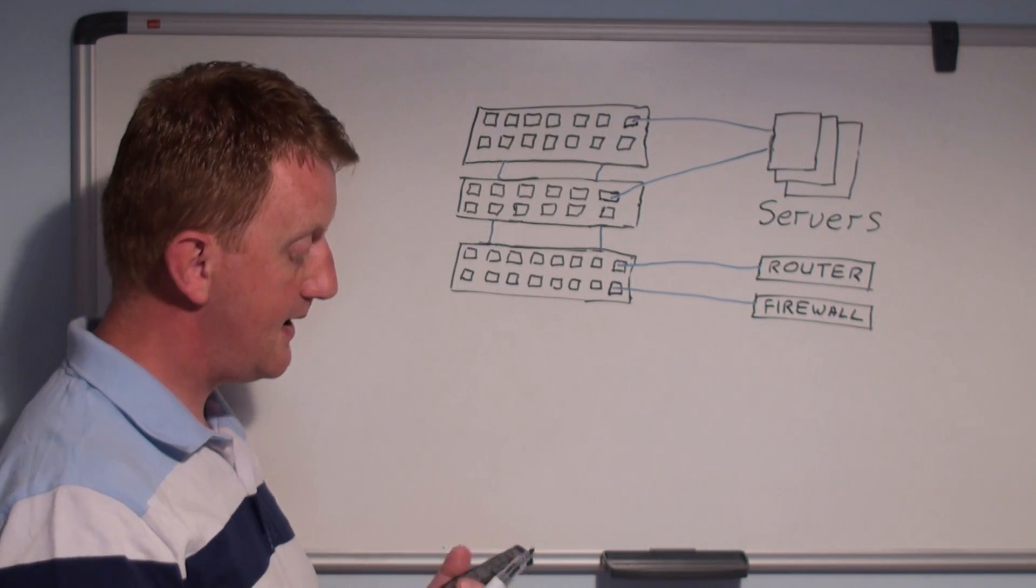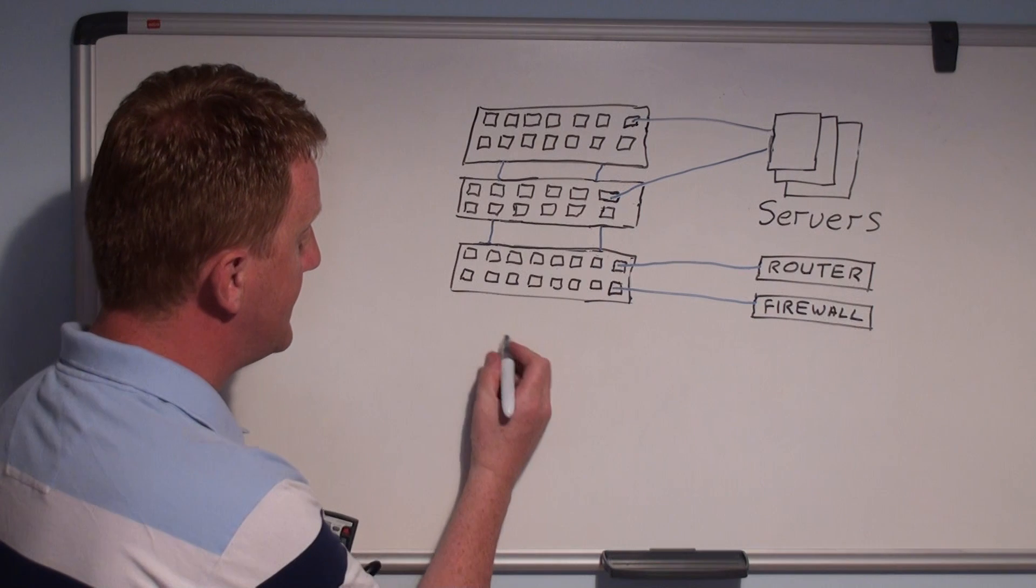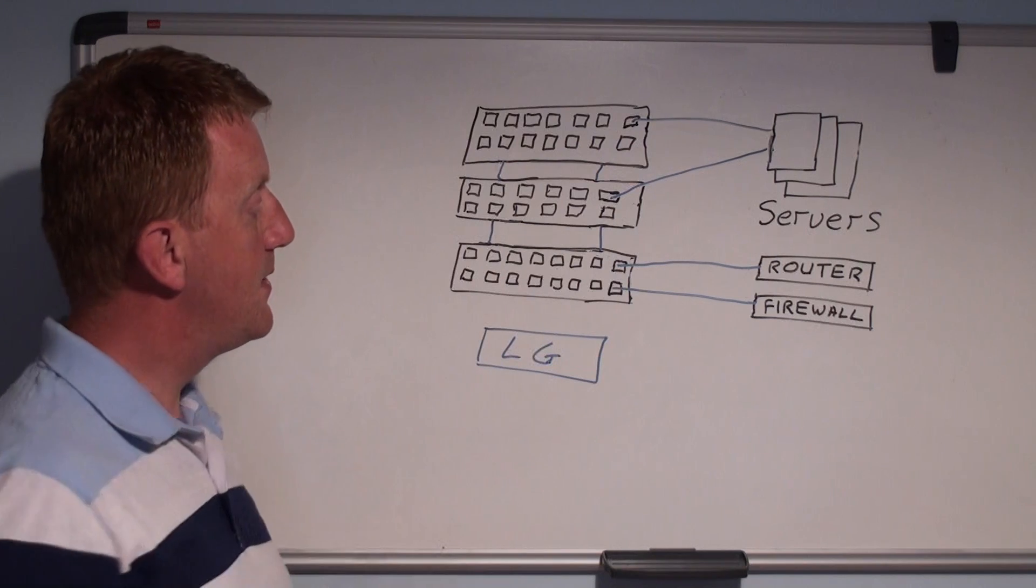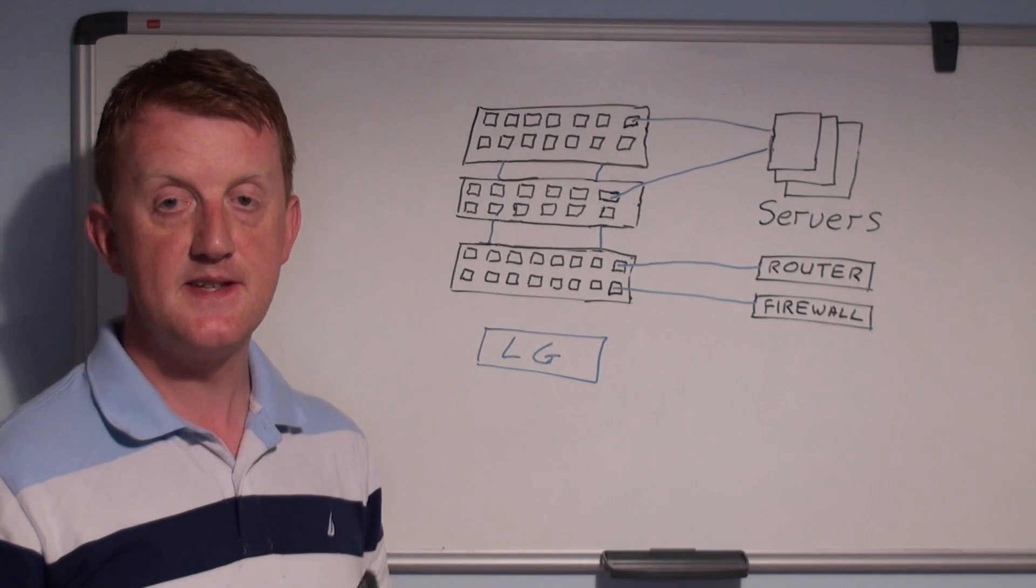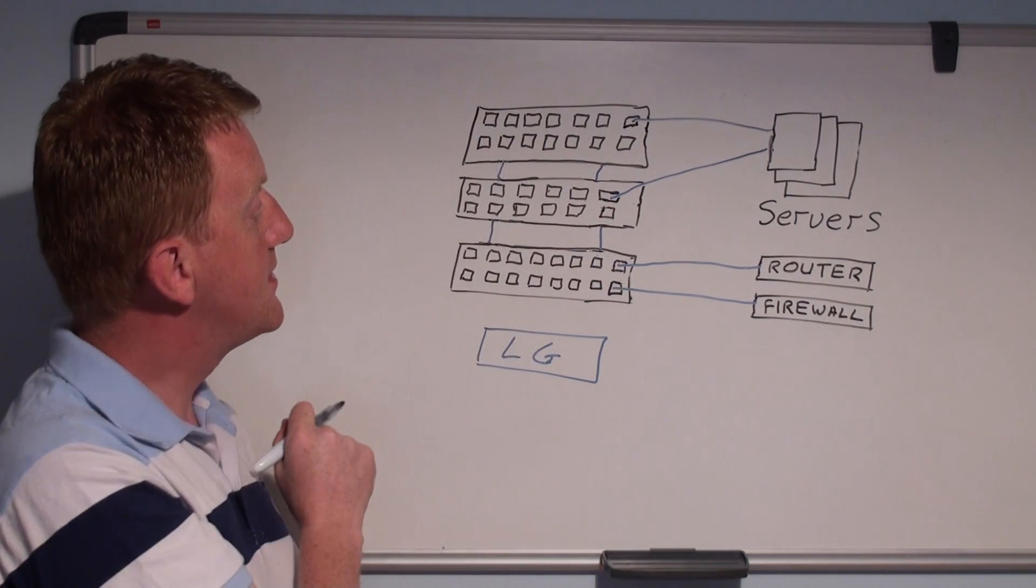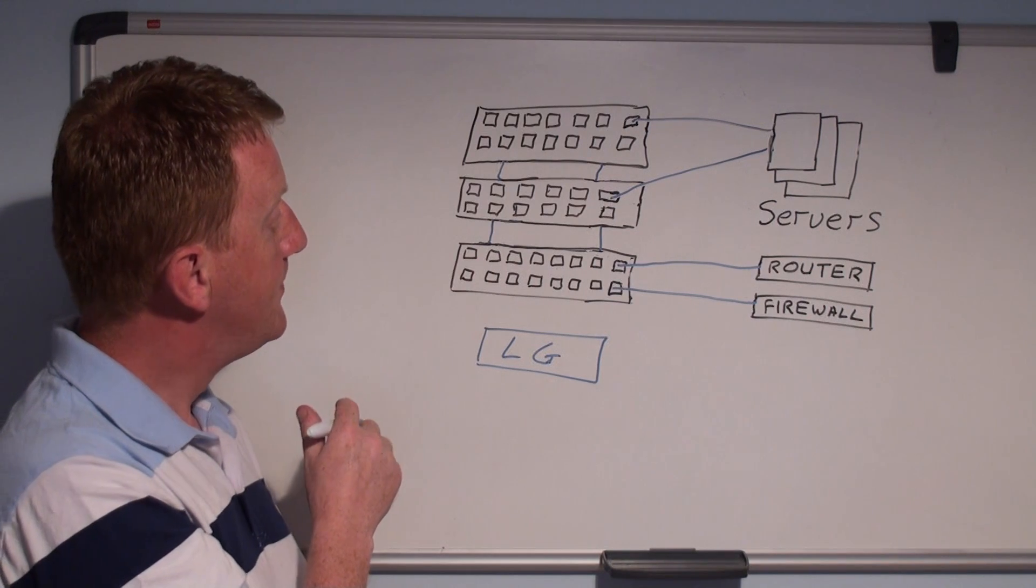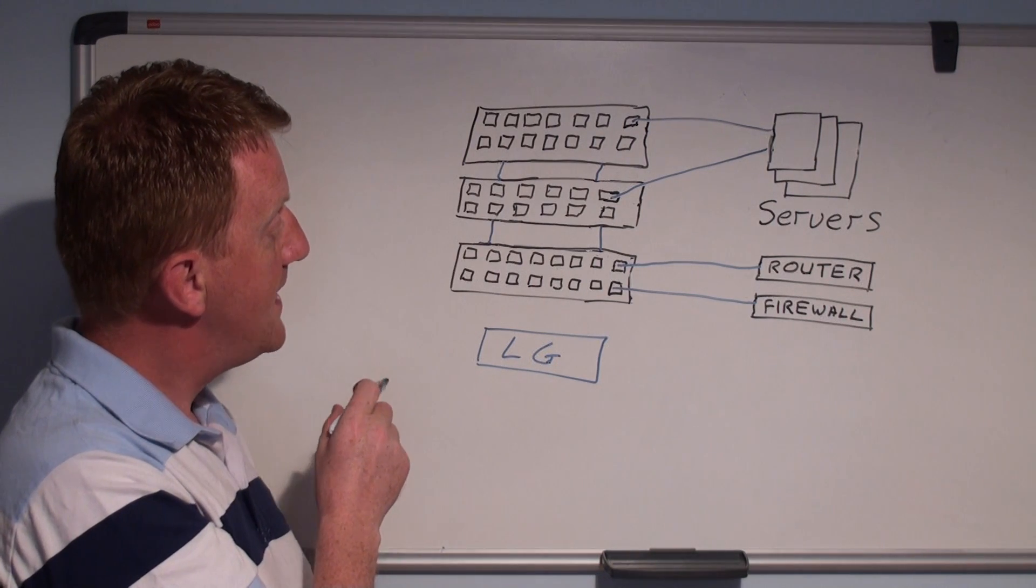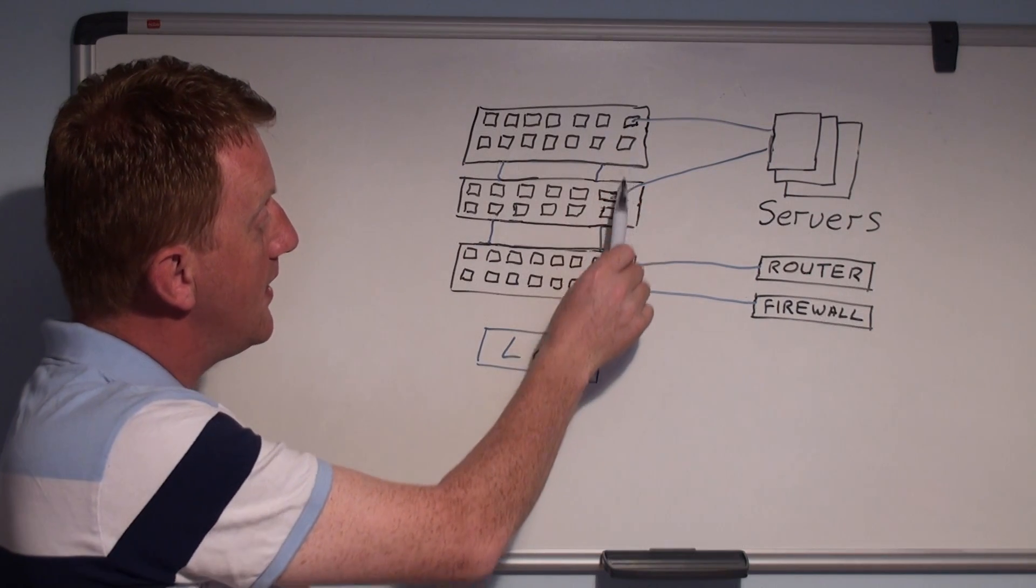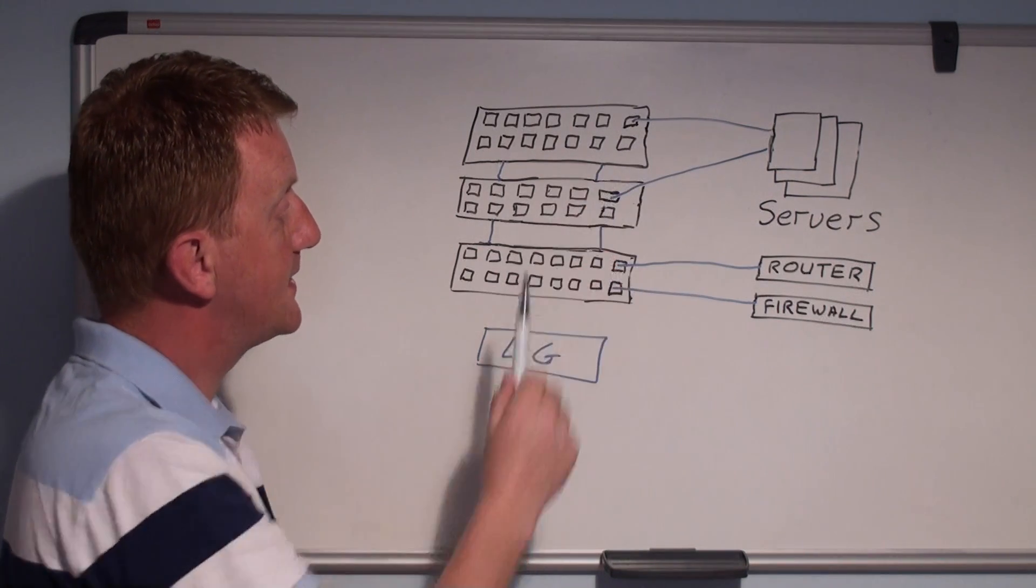The approach we take is to get a LanGuardian system installed and connect what we call sensor ports into one or more switches. On this particular network we've got three core switches, but you may have less or many more. To get visibility, we need to document where our main servers are plugged in. We just need to find out what switch and what port the main servers are plugged in.